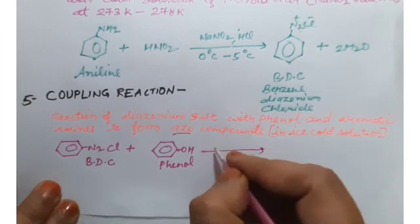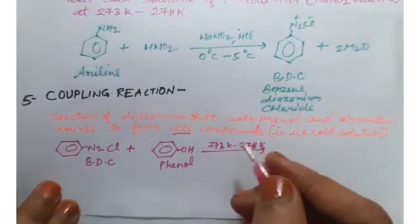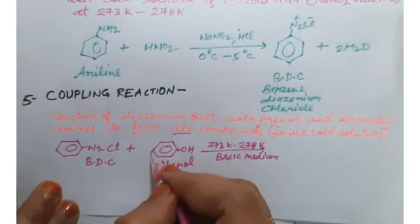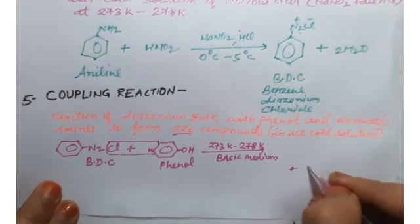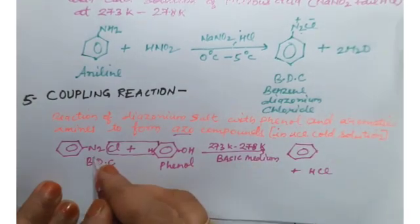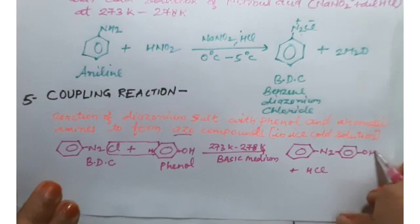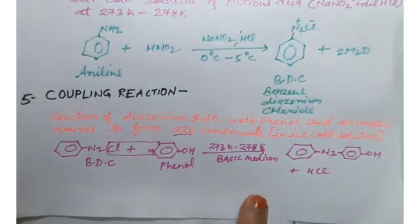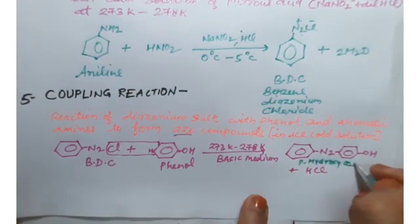The reaction with phenol is carried out in basic medium. HCl is removed out, and what remains is a benzene ring connected through -N=N- to another ring with -OH. Its name is para-hydroxy azo benzene.